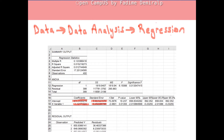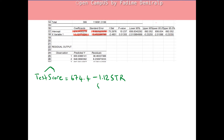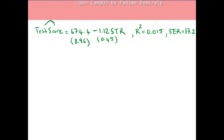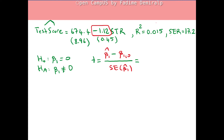Including the standard errors in our regression equation, the common way of reporting is: the standard error of β₁-hat is 0.45 and the standard error of β₀-hat is 8.96. The R-squared and standard error of the regression are also reported. For our hypothesis test, the t-statistic is β₁-hat (−1.12) minus the hypothesized value (0), divided by the standard error (0.45).